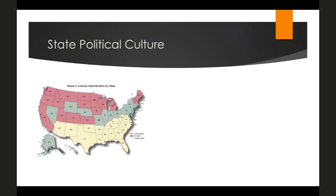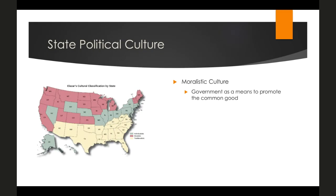In his 1966 book 'American Federalism: A View from the States,' Elazar argues there are three models of state political culture. The first is a moralistic culture: these states view government as a means to promote the common good and better society. There is a moralistic evaluation of government — they want government to be honest and not corrupt, and to pursue the common good. According to Elazar, this has its origins in the Puritan culture of New England, spreading westward to the upper Great Lakes and upper Midwest and down to the West Coast.